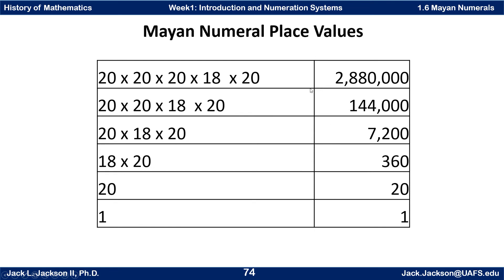But it's not so large a base as the Babylonians used, so a smaller number of symbols is needed — only 20 symbols. In fact, at certain grouping levels, not even all 20 symbols would be used.